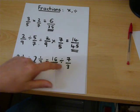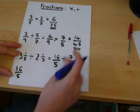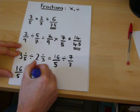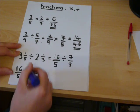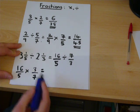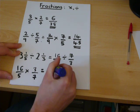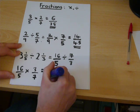When we divide fractions, we can rewrite it by reciprocating the second fraction. And rather than dividing, we times. And then 16 times 3 is 48, 5 times 7 is 35.